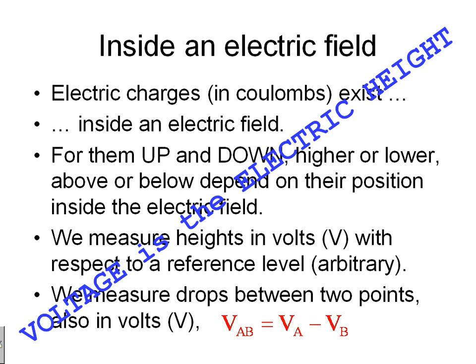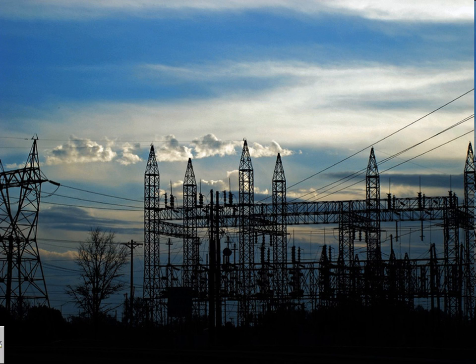Voltage is the electric height of a point in the circuit with respect to a reference point that is absolutely arbitrary. In the past, electric power networks were the only components the electrical engineer would work with, and they were connected to the planet — to earth, to ground. So it made sense to choose the planet as the reference for volts, the zero-volt point. That was arbitrary, and it still is. In electric power networks, ground is the reference node.